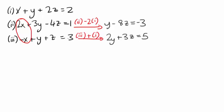We can keep going and use equation 2 to eliminate y from equation 3 now. We'll do equation 3 minus 2 times equation 2. And that gives 19z equals 11.